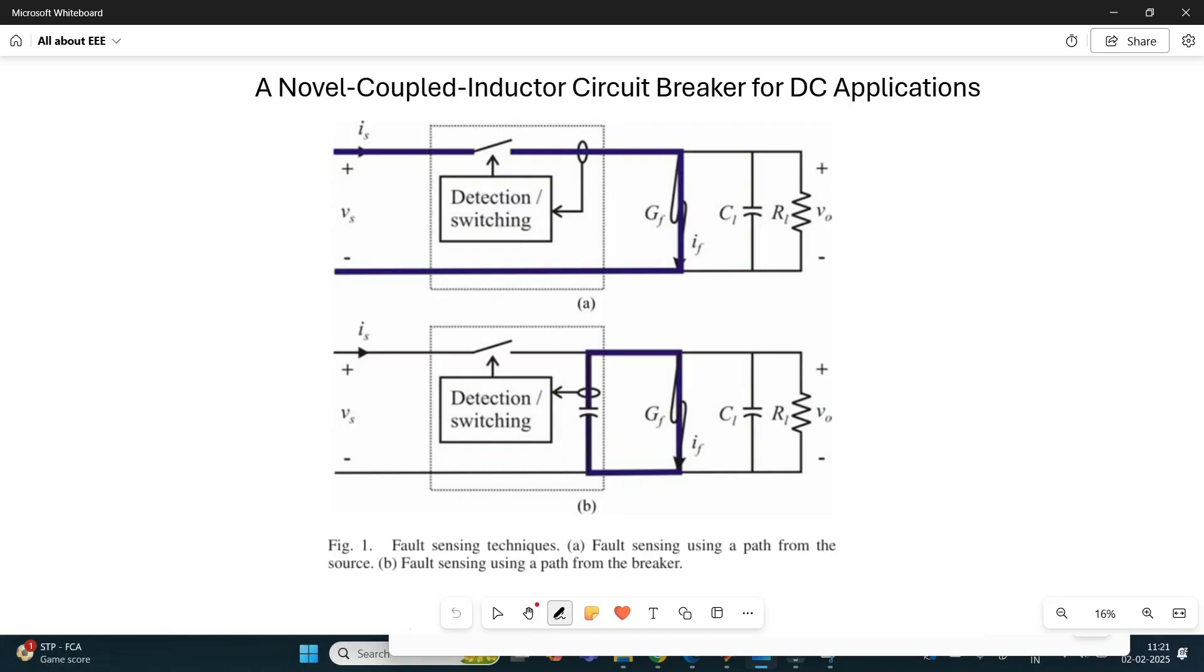Here, we can see two types of fault sensing techniques. First one shows a typical arrangement of circuit breaker incited between source and load. In this circuit, the source current is monitored for fault current detection. Alternatively, a capacitor can be connected to ground within a breaker in second technique. Actually, the second method is good for detecting transient currents and is used in motor drives for detection of shoot through.